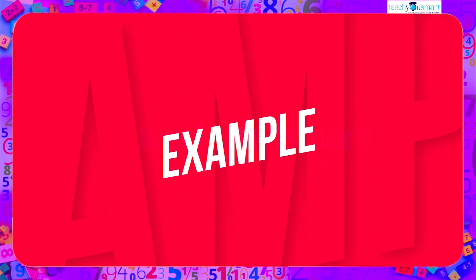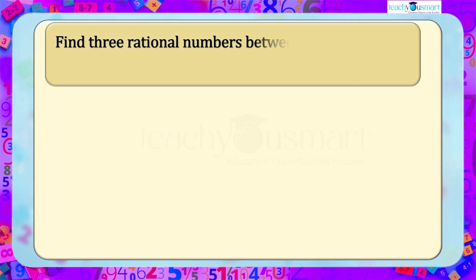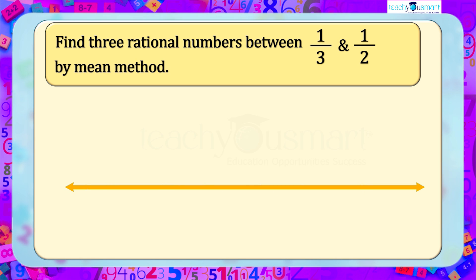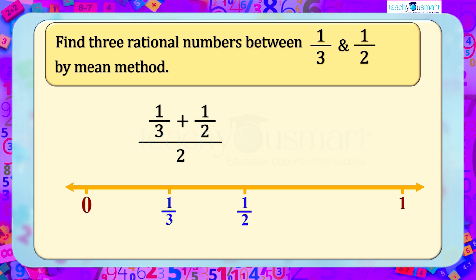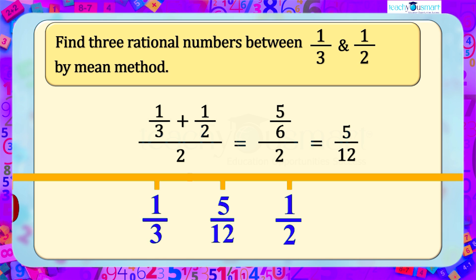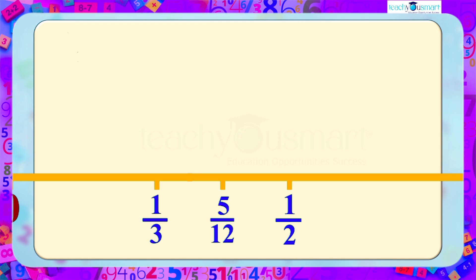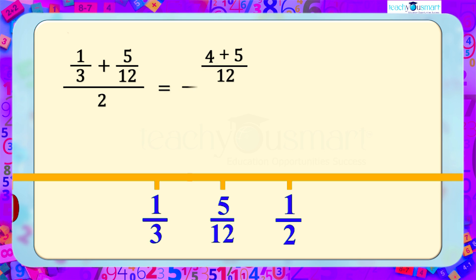Let's see another example. Find three rational numbers between 1/3 and 1/2 by the mean method. Take the mean of 1/3 and 1/2: (1/3 + 1/2) / 2 = (5/6) / 2 = 5/12. Now take the mean of 1/3 and 5/12: (1/3 + 5/12) / 2 = (4/12 + 5/12) / 2 = (9/12) / 2 = 3/8.